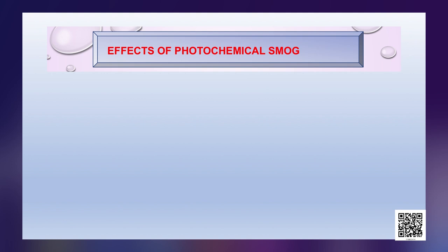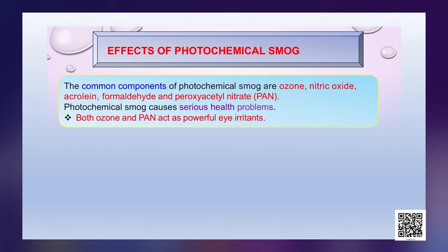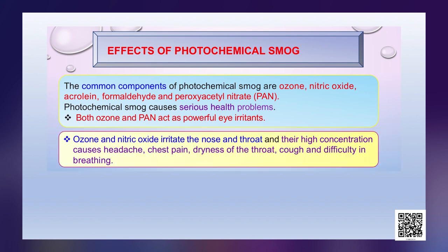Coming to the effects of photochemical smog: the common components are ozone, nitric oxide, acrolein, formaldehyde and PAN. The photochemical smog causes serious health problems. Both ozone and PAN act as powerful eye irritants. Ozone and nitric oxide irritate the nose and throat, and their high concentration causes headache, chest pain, dryness of the throat, cough and difficulty in breathing.